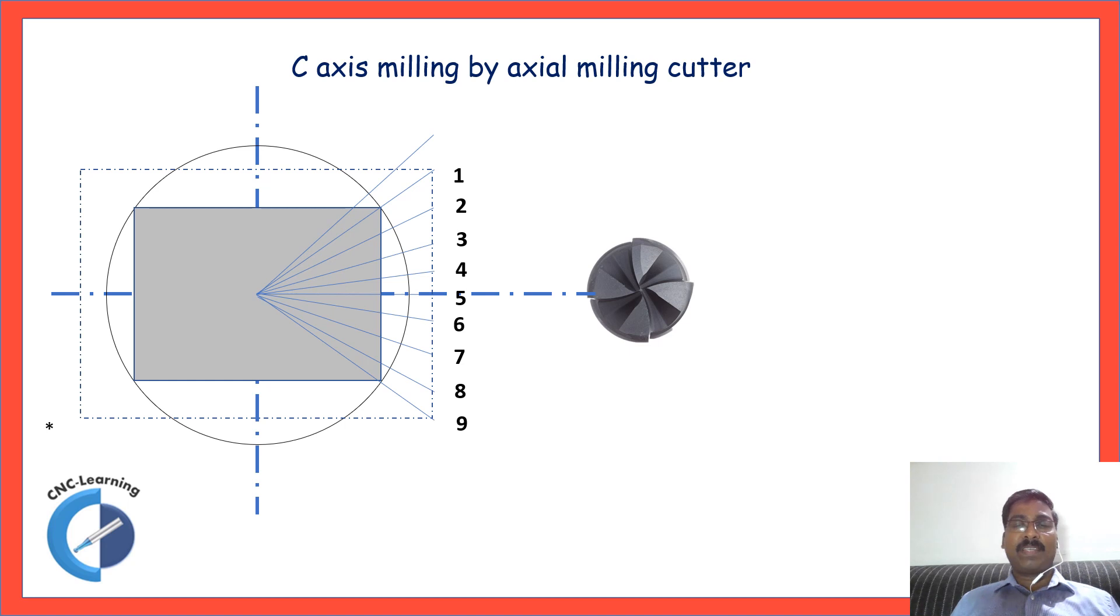In today's video, we will discuss about turn mill center, a turn mill with X, Z and C axis. So, it can be called as a three axis machine.